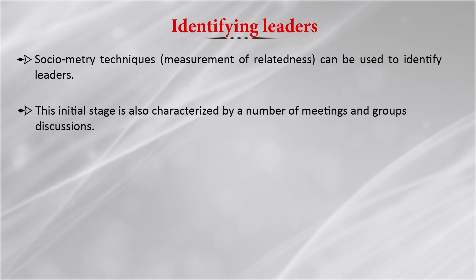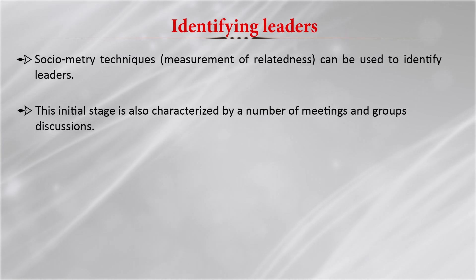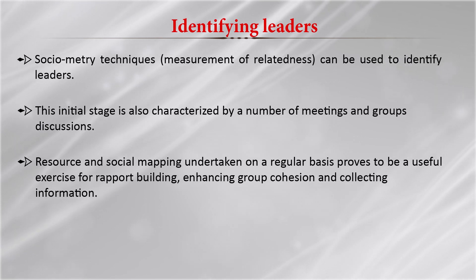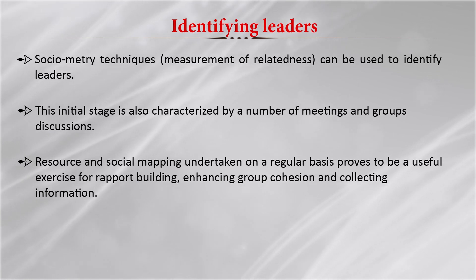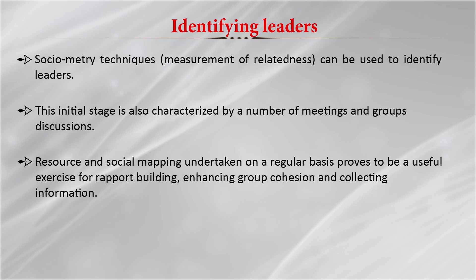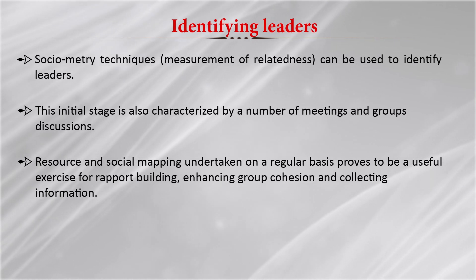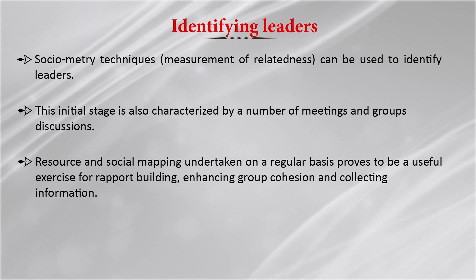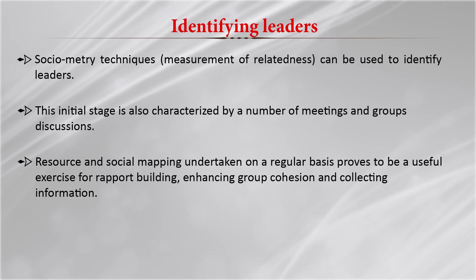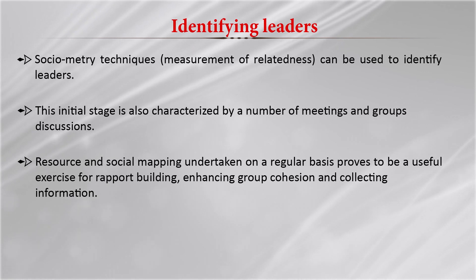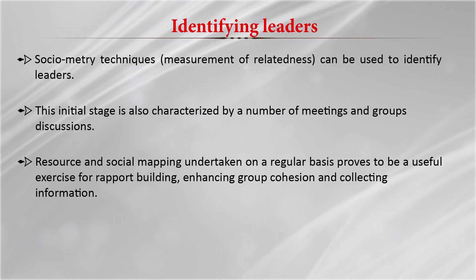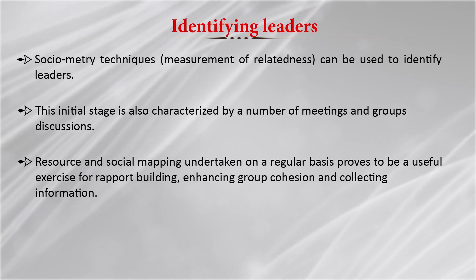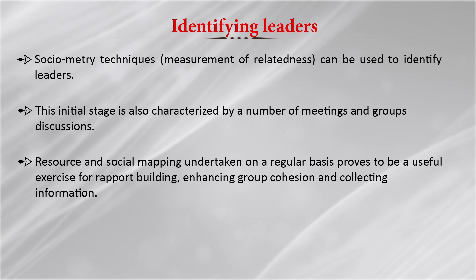This initial stage is also characterized by a number of meetings and group discussions. Resource and social mapping is undertaken on a regular basis, which proves useful for building rapport between members, enhancing group cohesion, and collecting information. This helps in avoiding conflict. Rapport building is very important. If there are 10 or 12 members, each member should have a good rapport with the others. They should have group cohesiveness, because if it is not there, conflicts will arise.